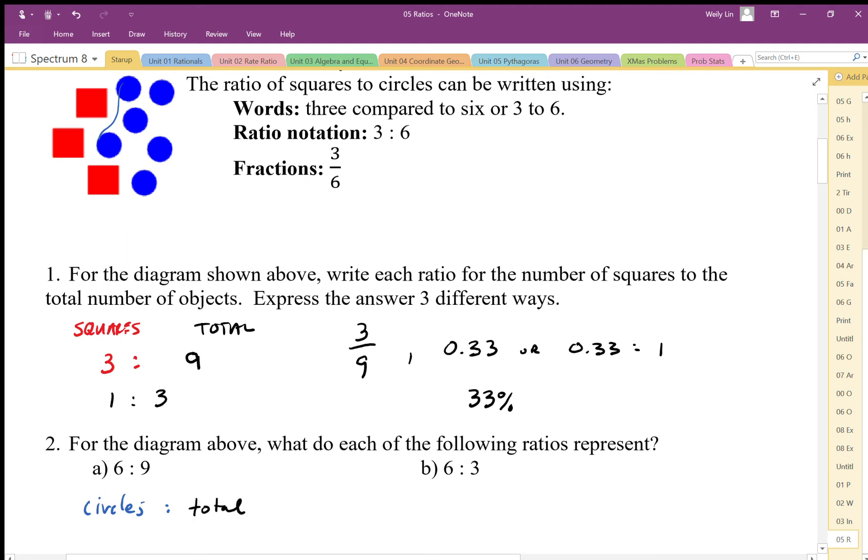We also have here a part to whole ratio. We have six to three - well that would be representing circles. So we have six circles, the three represents the three squares.